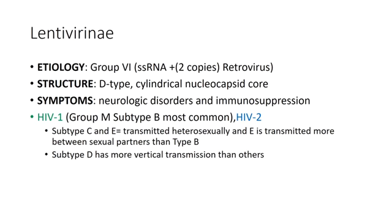To begin, when discussing HIV, it's nice to know what HIV is. It's one of the viruses found within Lentivirinae. It's a Group VI virus, which is a single-sense RNA, positive-sense retrovirus. HIV specifically has two copies of single-stranded RNA in its genome. The structure to emphasize is the D-type, which is that cylindrical nucleocapsid core — they like emphasizing that for exam purposes. It can cause neurological disorders in addition to immunosuppression, caused from HIV-1. The most common form is Group M, subtype B — the most common found worldwide.